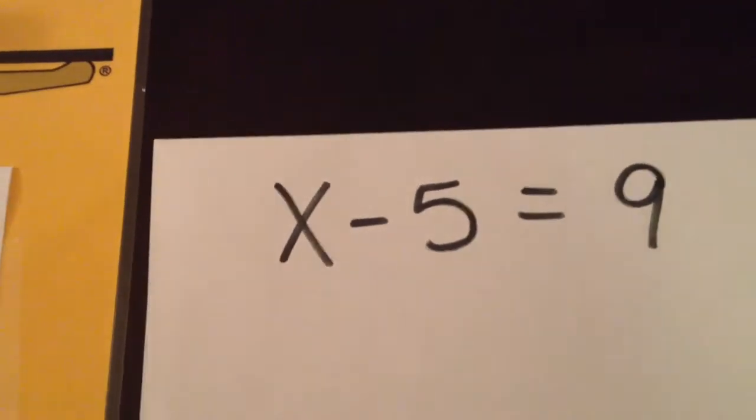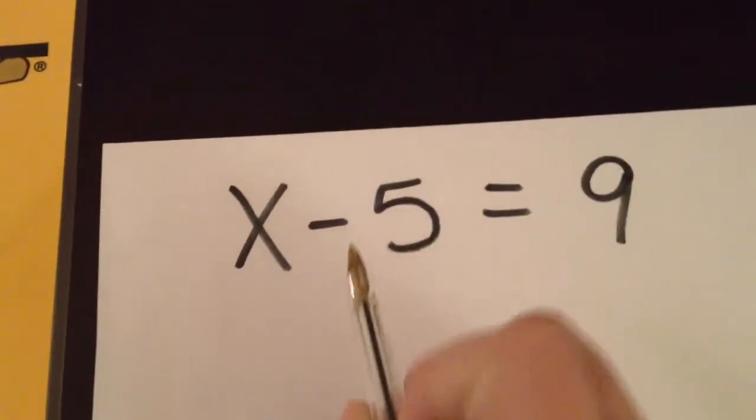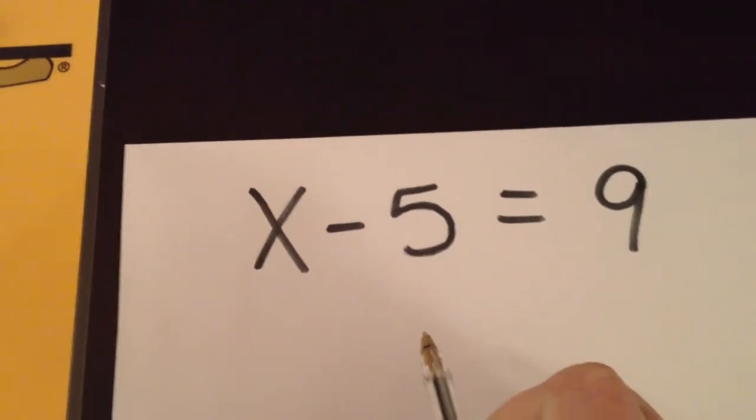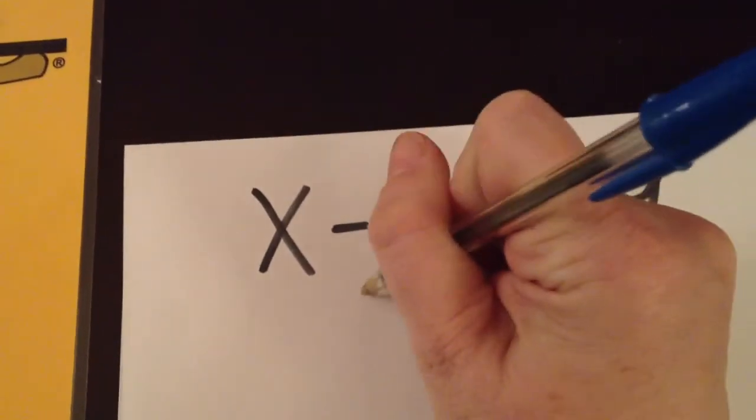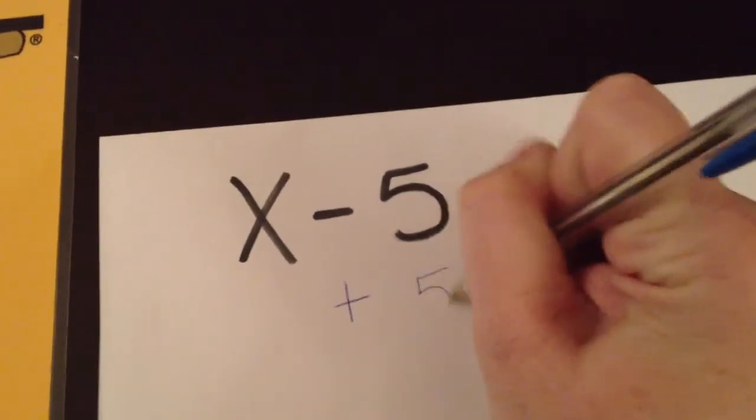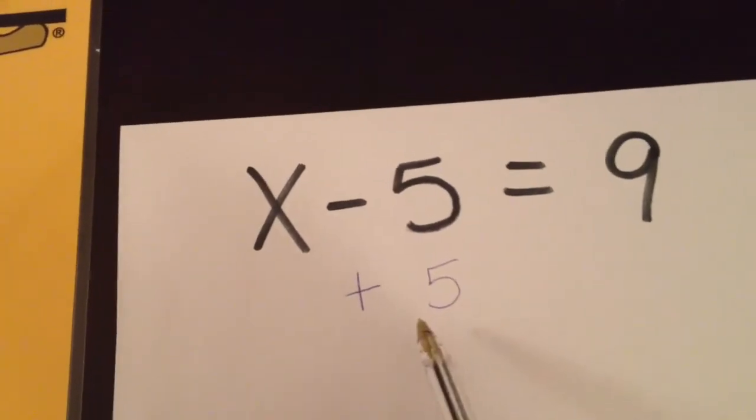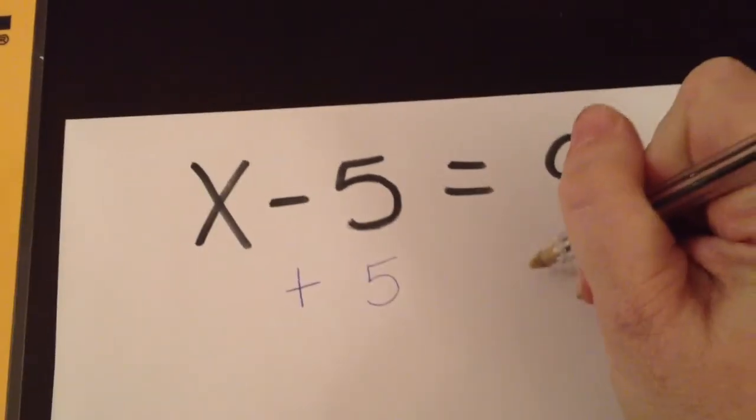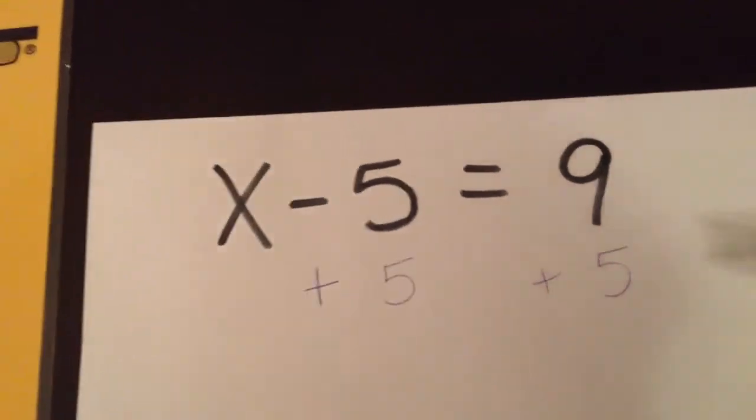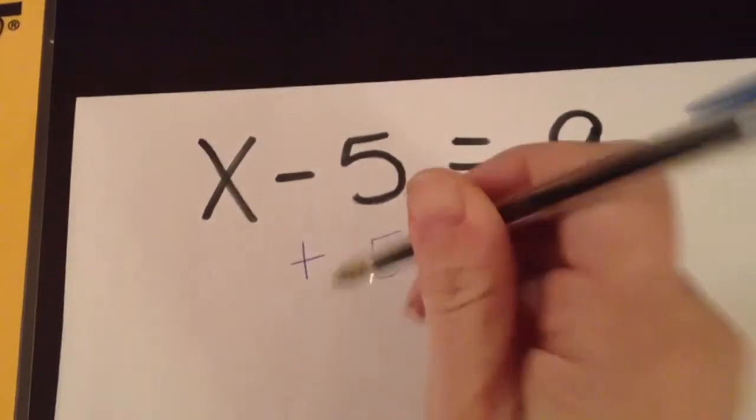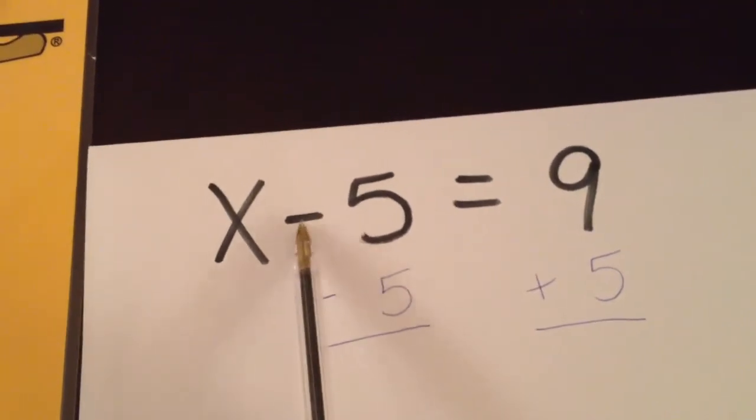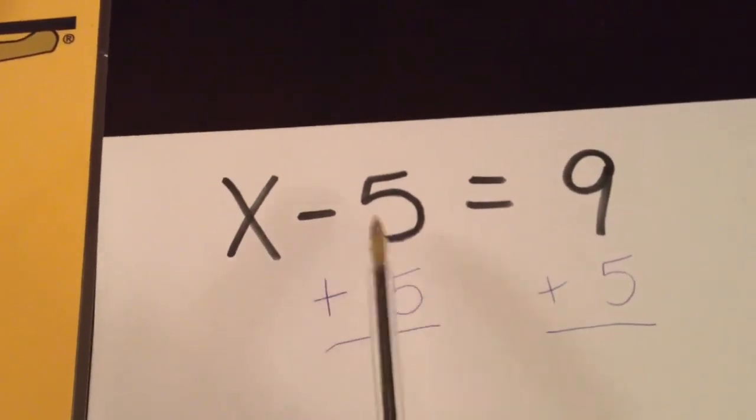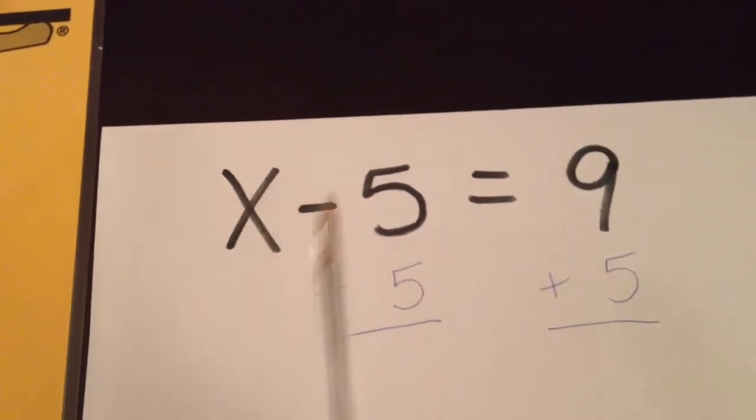So when we're subtracting 5, the way that we would get rid of this minus 5 is to add 5 to both sides. Because minus 5 and plus 5 are opposites, we're going to do the same thing to both sides of the equation. We're left here with subtracting 5 and adding 5 are opposites, so that simply goes away.